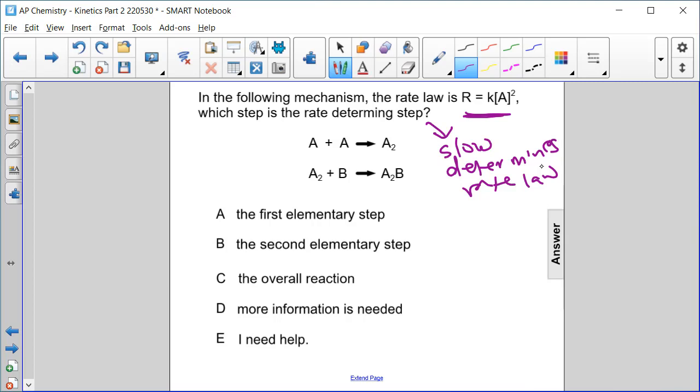So, which of these steps matches this rate law? Only one reaction has compound A in it, and it's this one right here. This has compound A.